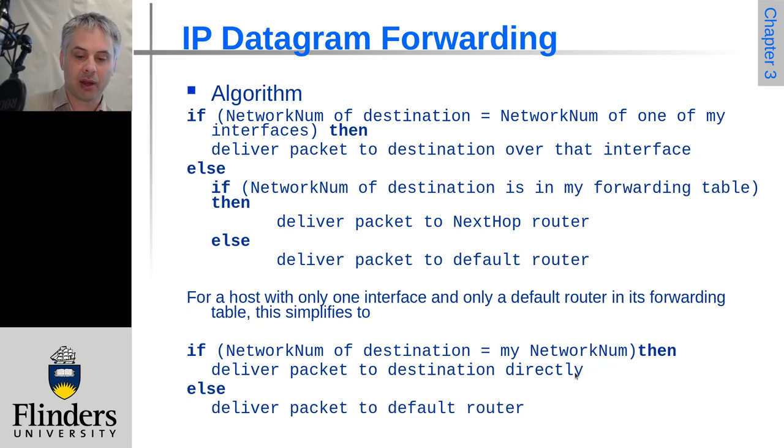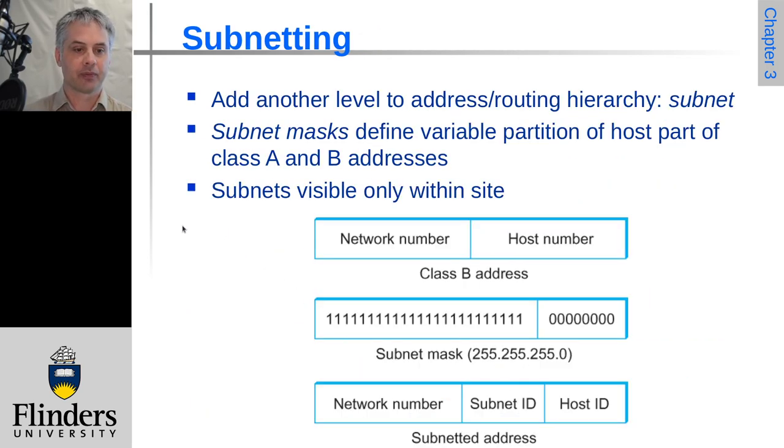Or if you don't, if it's not on the same network, you would send it to the Ethernet address that corresponds to the IP address of the default router. But the packet IP address will still be the actual, the end destination IP address.